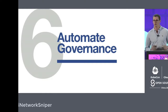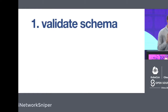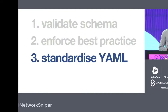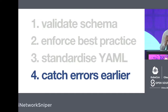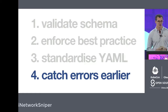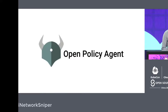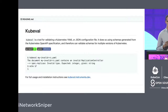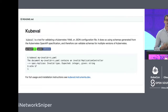Number six is automate your governance. If you're looking at validating your YAML files, enforcing best practices when writing resources, standardizing your YAML, or getting quick feedback when your YAML isn't the way you want it, just use the Open Policy Agent, COPPA from Cloud 66, or Kubeval from Instrumenta. They're all designed to look at your YAML and give you feedback or reject the resources.